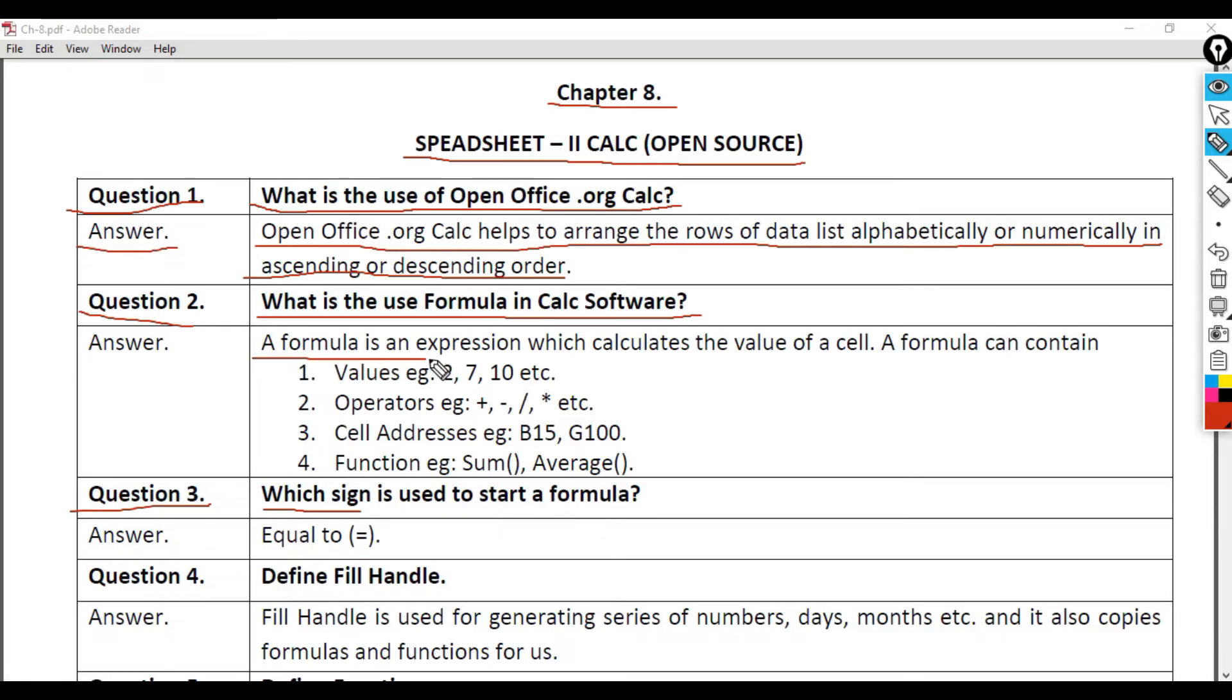Question 2: What is the use of formula in Calc software? Answer: A formula is an expression which calculates the value of a cell. A formula can contain: 1) Values like 2, 7, 10, etc.; 2) Operators like +, -, ÷, ×, etc.; 3) Cell addresses like B15, G100; 4) Functions like SUM, AVERAGE. Question 3: Which sign is used to start a formula? Answer: Equal to (=).